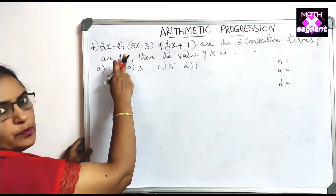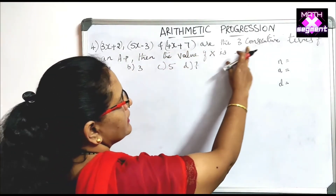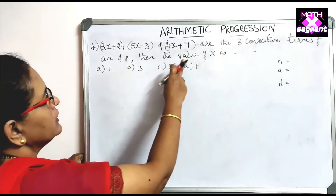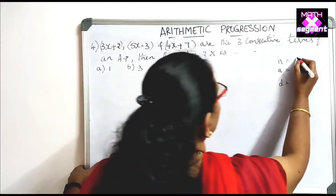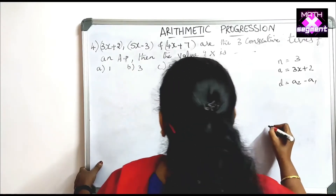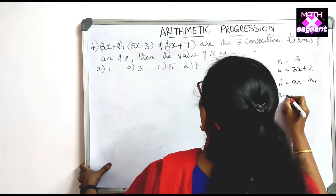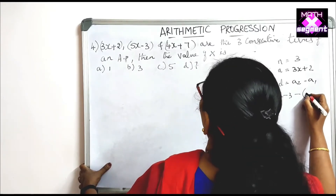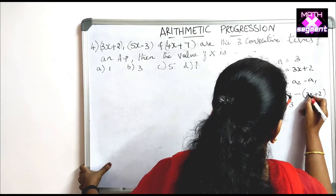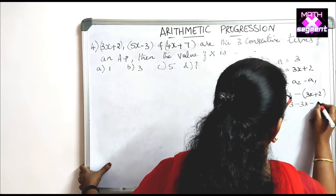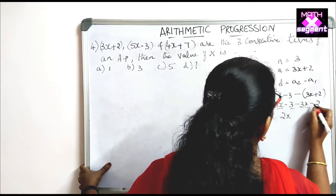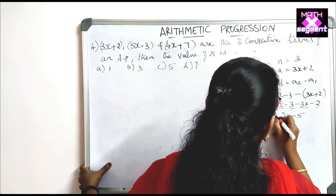The next question: 3x plus 2, 5x minus 3, and 4x plus 7 are three consecutive terms of an AP. Find the value of x. With N equal to 3, the first term is 3x plus 2. The common difference D equals A2 minus A1, which is (5x minus 3) minus (3x plus 2), giving 5x minus 3 minus 3x minus 2, which simplifies to 2x minus 5.